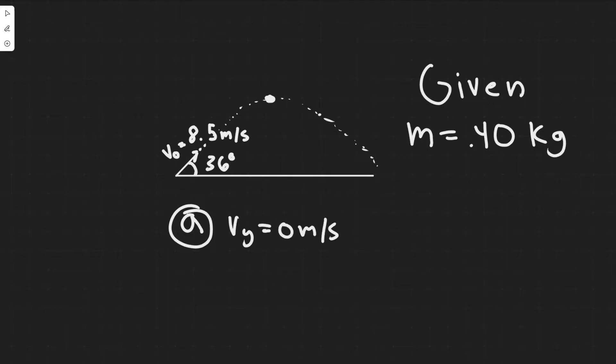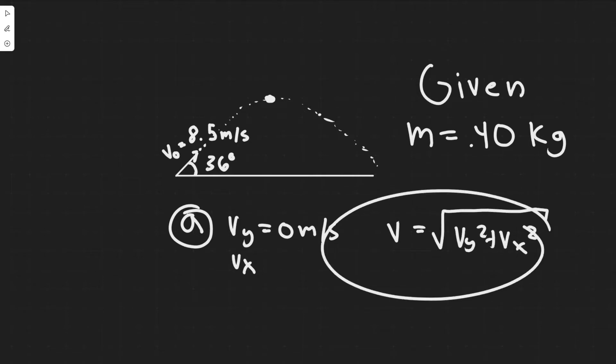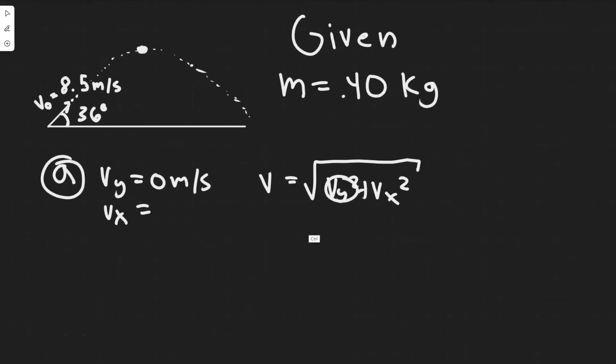If we know v_y is 0 meters per second at its highest point, we just need to find v_x. The speed or velocity magnitude would be the square root of v_y squared plus v_x squared. But notice that v_y is 0 at its highest point, so v is really just the square root of v_x squared, meaning v equals v_x. If we can find the velocity in the x at this point, then we'll have our answer.